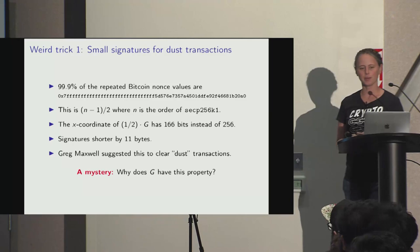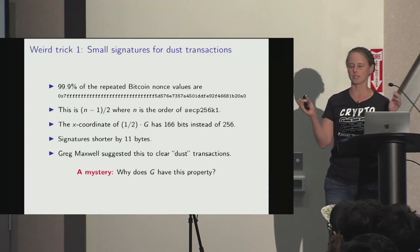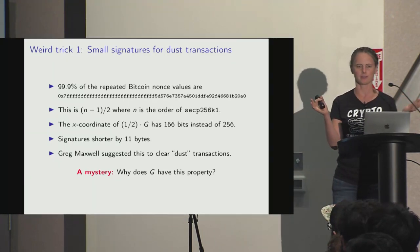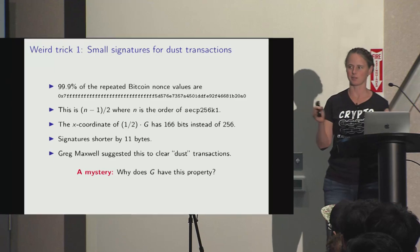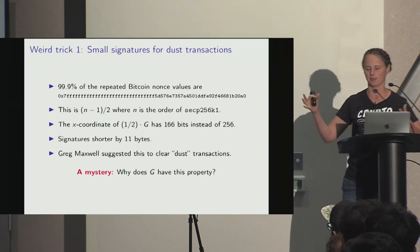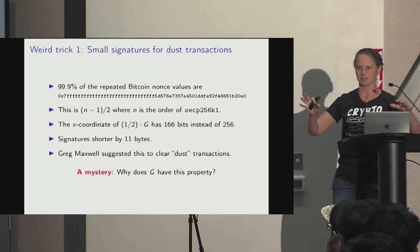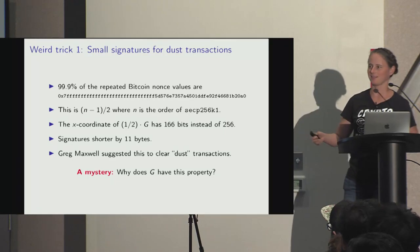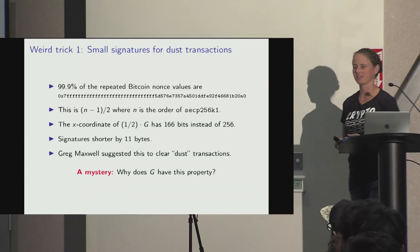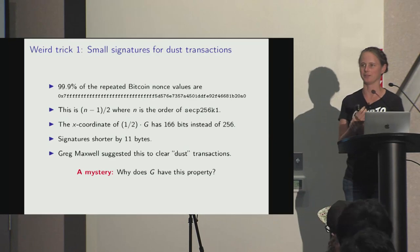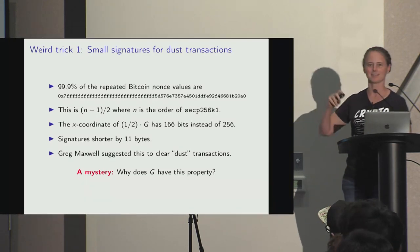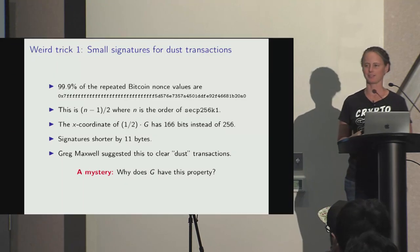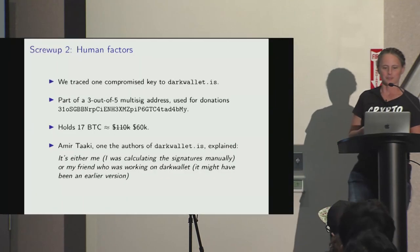166 bits is intriguingly close to 160 bits — the length of a SHA-1 hash — but it's not 160 bits. It seems like something is being hashed and then appended. A number of other curves of this type also have this property, with some variance. This is telling us something about how these curves were generated, since you would never expect this to happen at random.